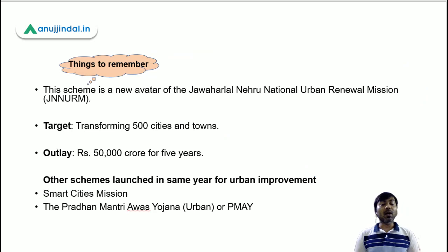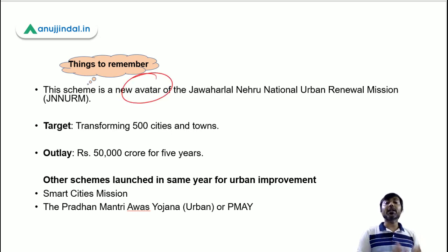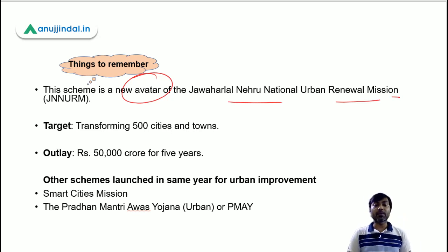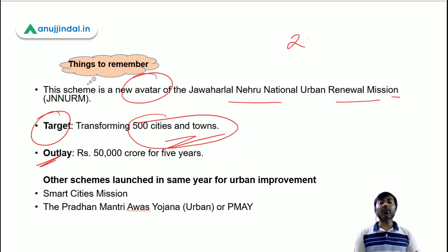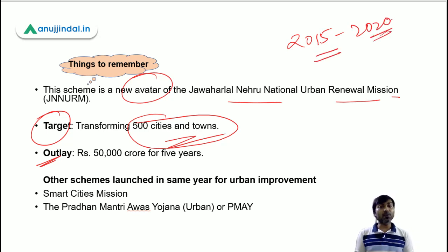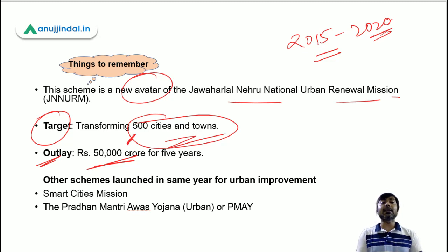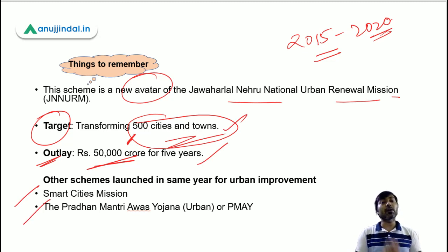Now, what are the things you should remember? First, this scheme is a new avatar of JNNURM — Jawaharlal Nehru National Urban Renewal Mission, which it replaced. Under this scheme, the target is transforming 500 cities and towns, and the outlay was 50,000 crores for 5 years, 2015 to 2020. You can add a little logic: 500 cities and 50,000 crores — both start with 5. Two other missions launched in the same year are Smart Cities Mission and Pradhan Mantri Awas Yojana Urban.